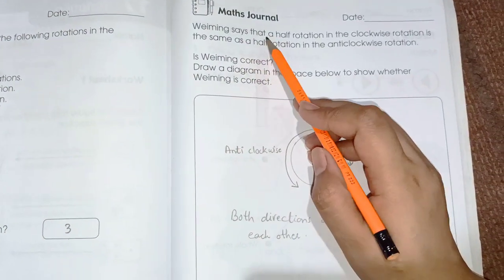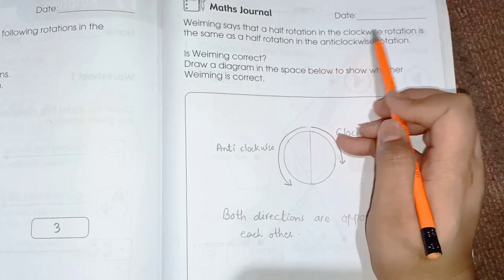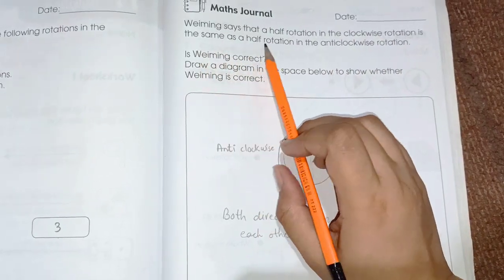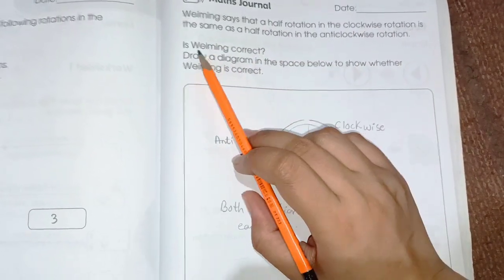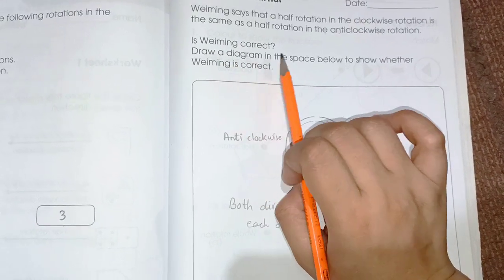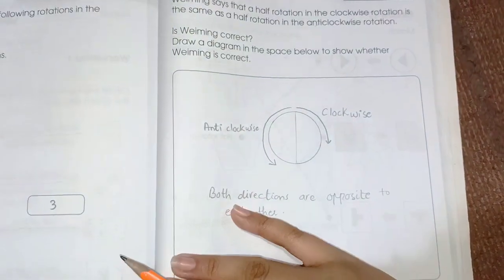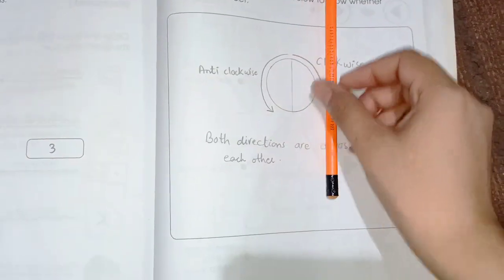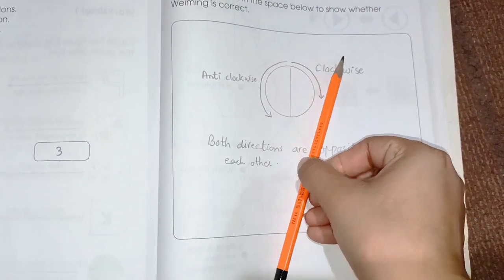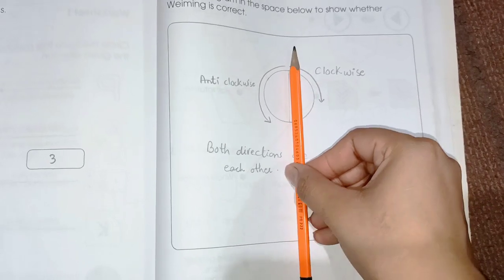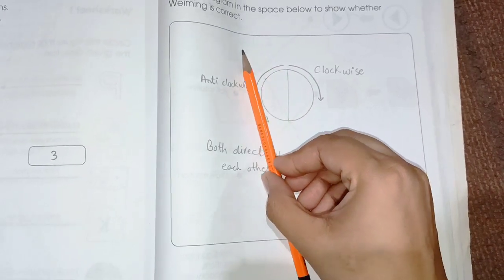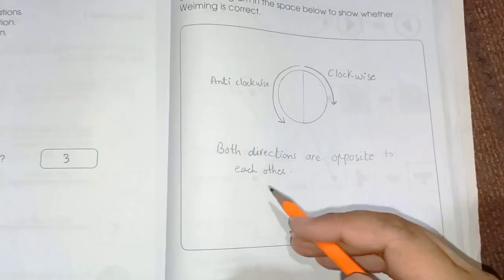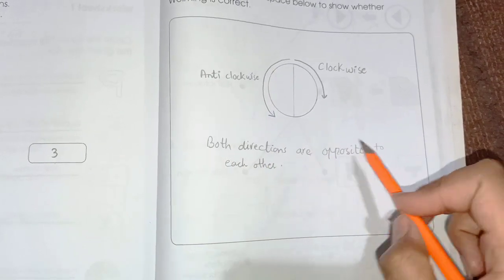Maths journal. Wiming says that a half rotation in the clockwise rotation is same as the half rotation of anti-clockwise. Is Wiming correct? Draw a diagram in the space below to show whether Wiming is correct or not. So this is the direction of clockwise - means simple, the clock direction, tick tick tick. And this is the direction of anti-clockwise - means the clock is moving opposite. So it is not correct. Both directions are opposite to each other.